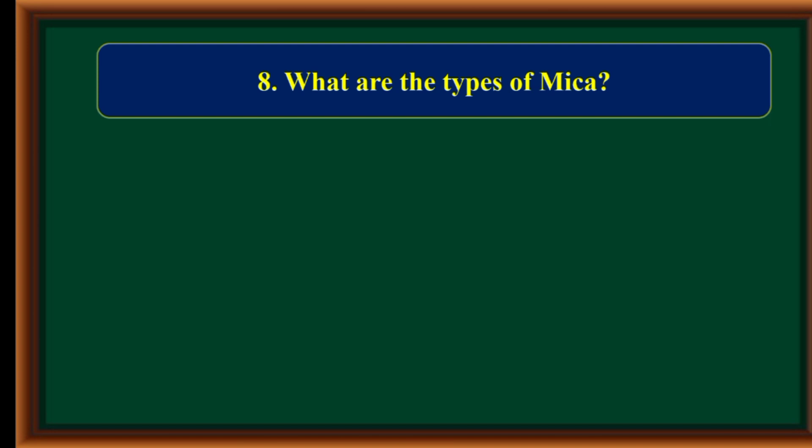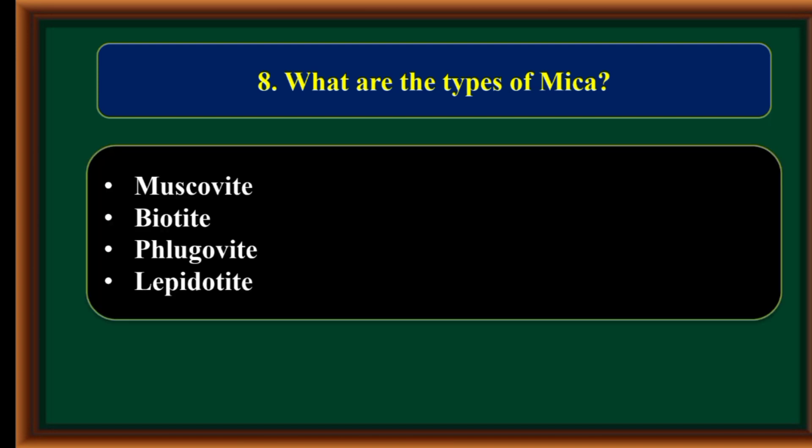What are the types of mica? Muscovite, Biotite, Phlogopite, and Lepidolite.